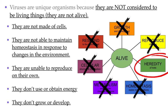What about the last criterion — heredity? Viruses do indeed have genetic material, either DNA or RNA, which is the basis of heredity. They have genes and pass them on to future generations, and they can even evolve and change as their genes develop mutations. So this criterion is actually met. But since all criteria must be met to be considered alive, viruses are not alive.